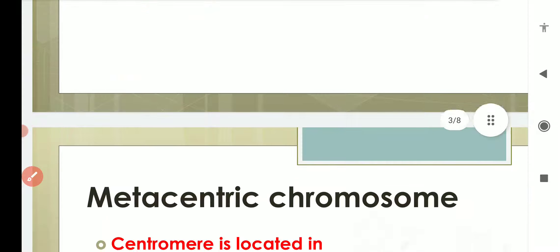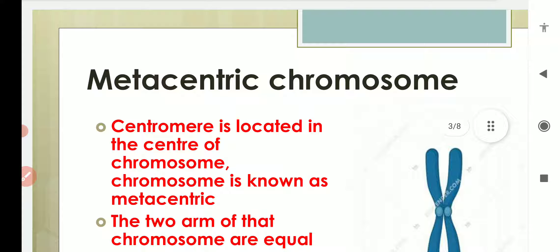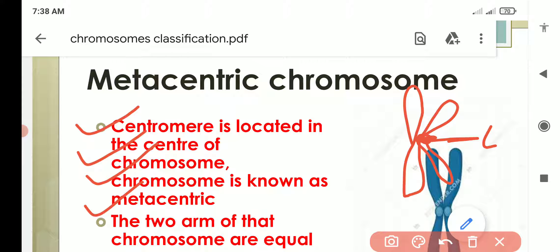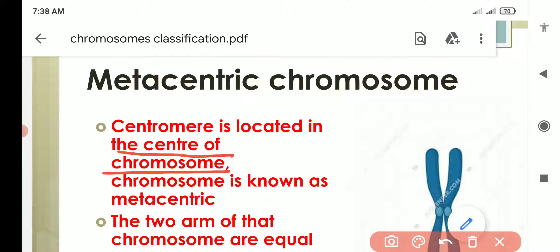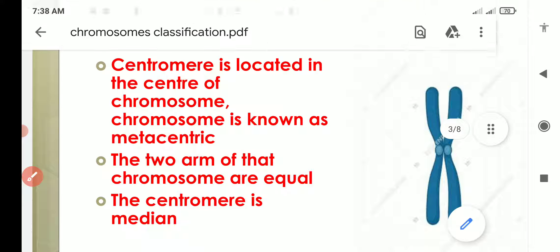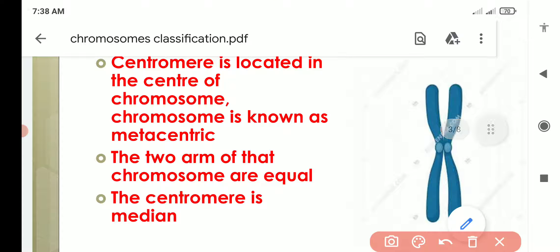We will discuss all one by one. First of all, metacentric chromosome. What is a metacentric chromosome? When the centromere is located in the center of the chromosome, then this chromosome is known as metacentric chromosome. Meta means middle. When the centromere is present in the middle, the two arms which form will be equal in length. So here no long arm or short arm — both arms will be equal in size or length.